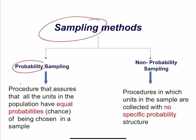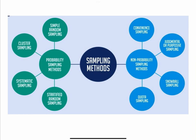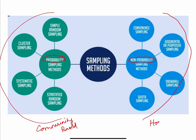Coming to the topic, sampling methods can be broadly classified into probability sampling or non-probability sampling — otherwise called random sampling or non-random sampling. Random sampling assures all participants or units in the population have equal probability of being chosen. In non-random or non-probability sampling, each unit will not get an equal opportunity to participate; the equal probability present in random sampling will not be present here. In healthcare research, probability sampling is most commonly used in community-based studies, whereas non-probability sampling is used in hospital-based studies, with some exceptions depending on the setting.